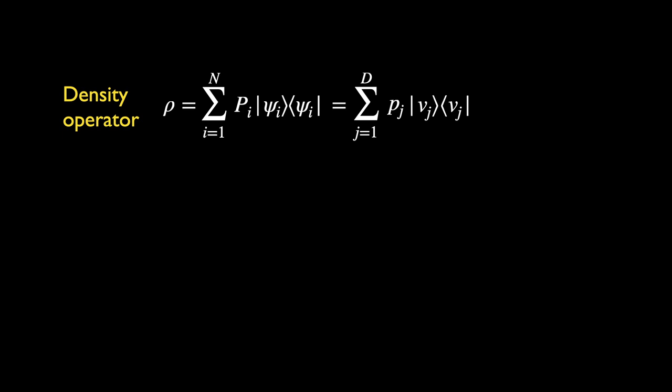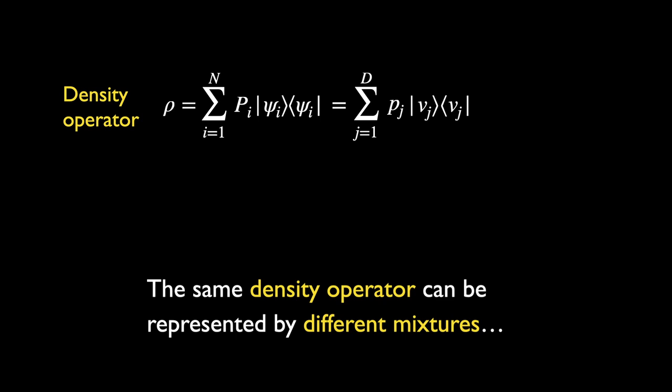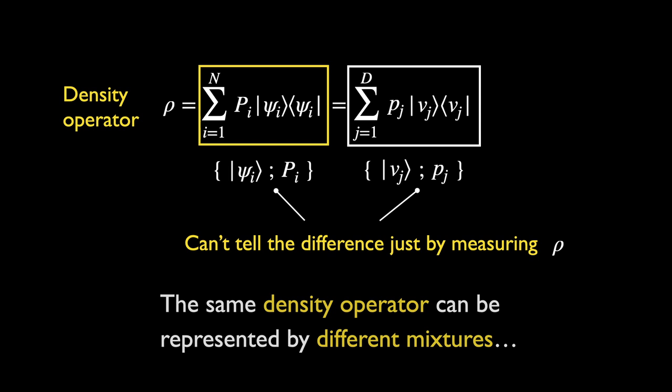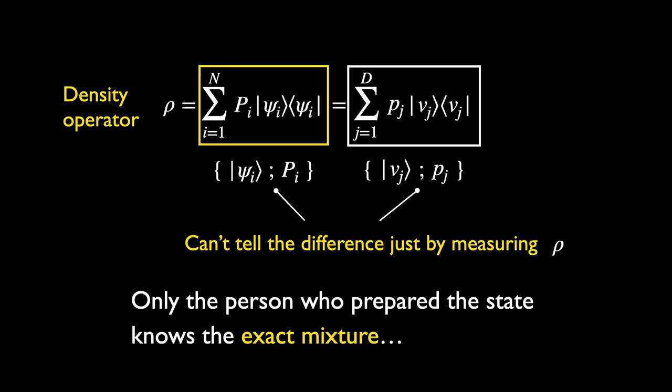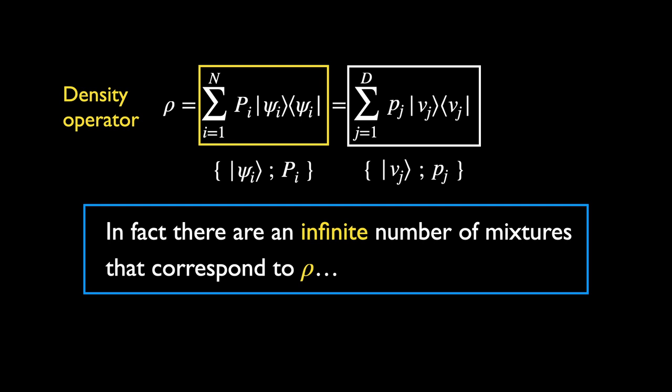This also verifies that the eigenvalues of rho can be seen as probabilities, which means the eigenbasis expansion of the mixed state can be regarded as an alternative mixture with the same density operator rho. Thus rho can correspond to at least two mixtures: one according to the way the state is actually prepared, and another in terms of its eigenstates. We simply can't tell the difference by only making measurements on rho — only the person who prepared the state knows the exact mixture. In fact, there are an infinite number of mixtures that correspond to the same density operator.